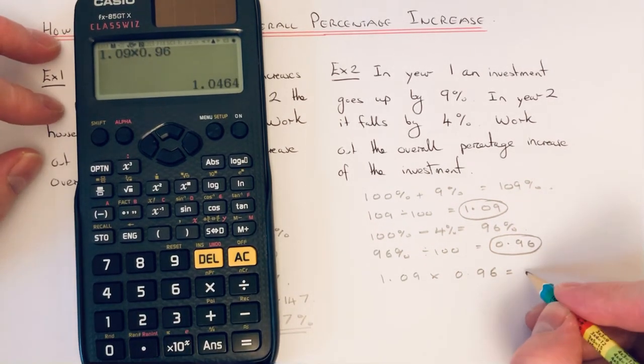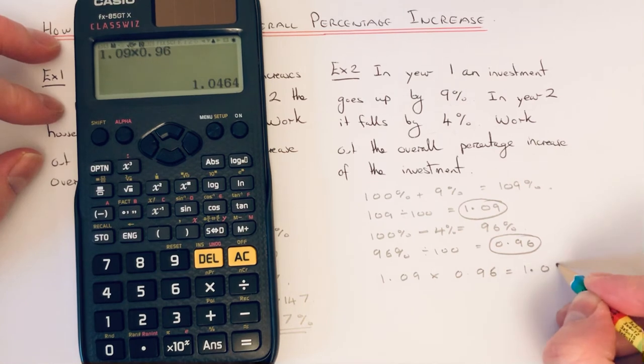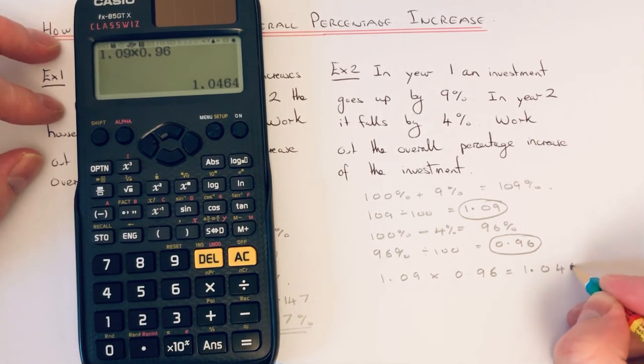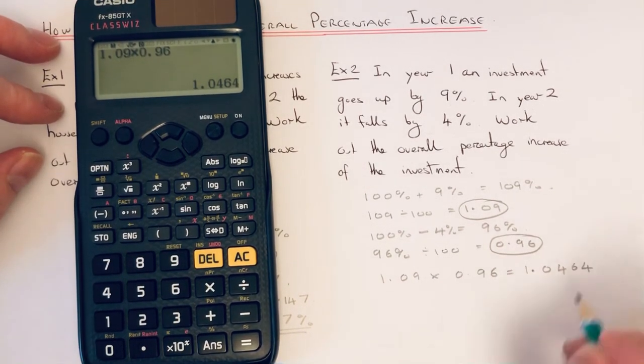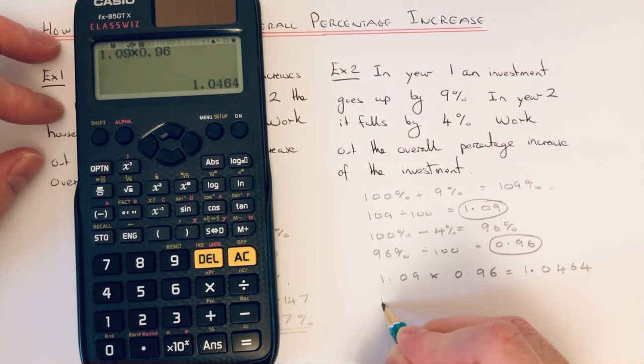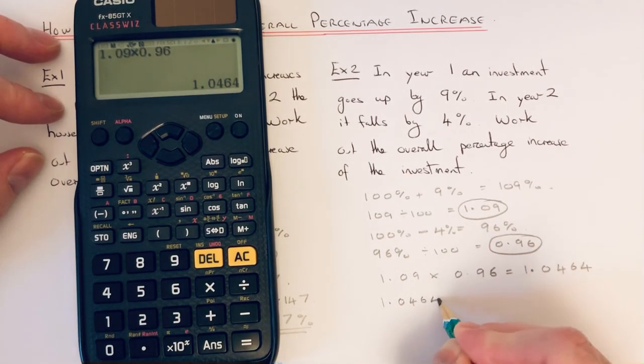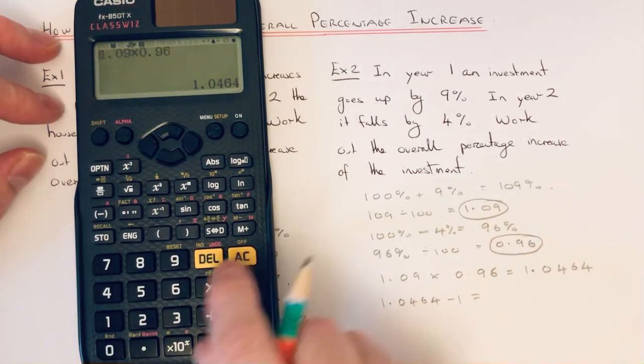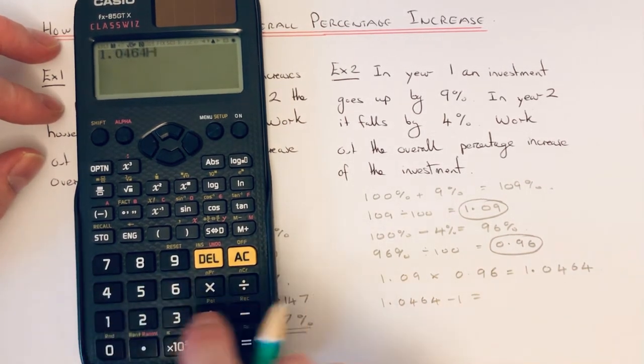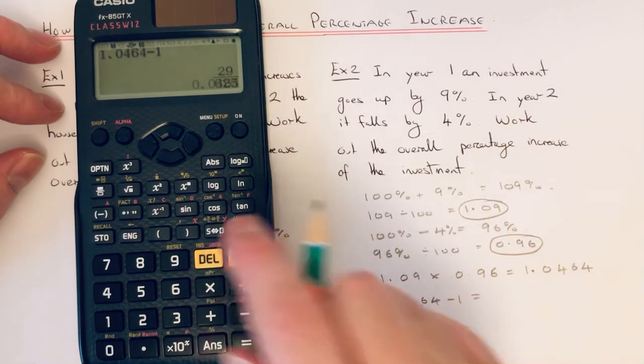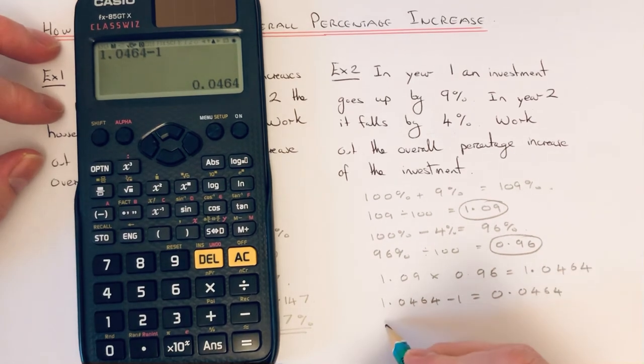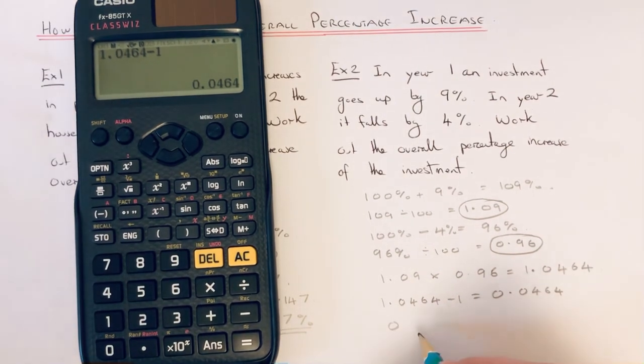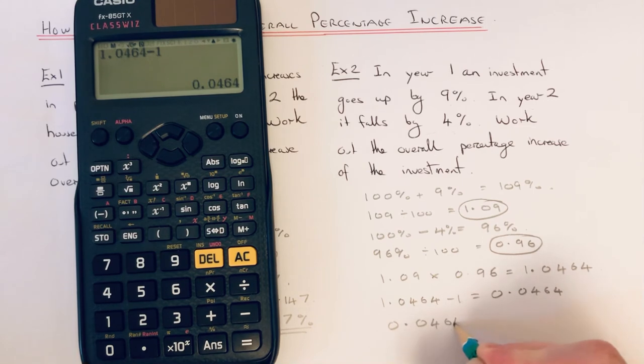So that gives us 1.0464. Again, take this away from 1. So that gives 0.0464, and then times this by 100.